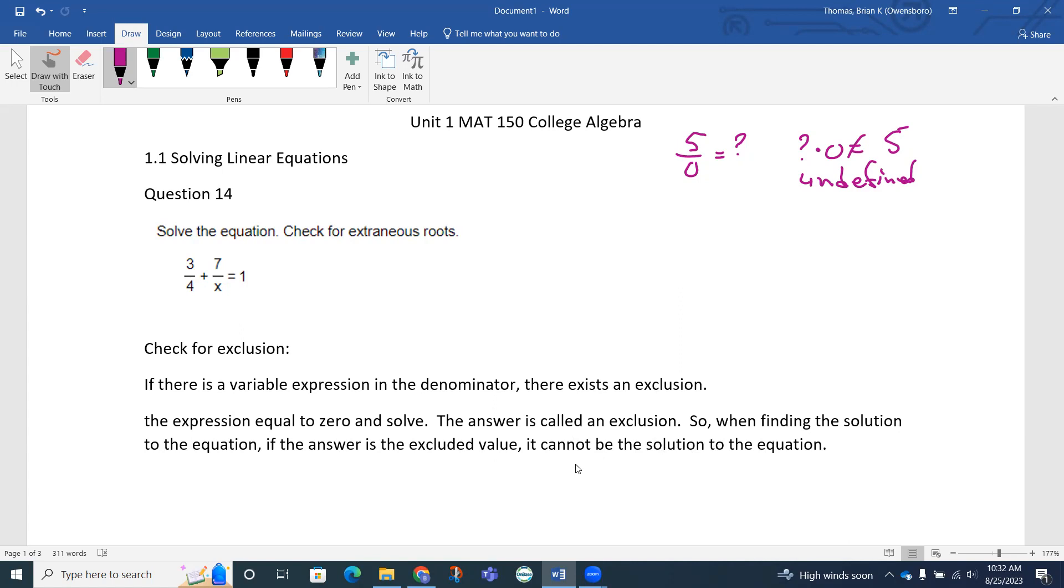We have to throw it out. In our problem, notice how x is in the denominator. There is an expression where the variable is in the denominator. To find the exclusion, we set that expression equal to 0. We set x equal to 0. We want to solve, but notice it's already got x here. X equals 0 is going to be solved already. That's going to be the exclusion. We will exclude x equals 0.